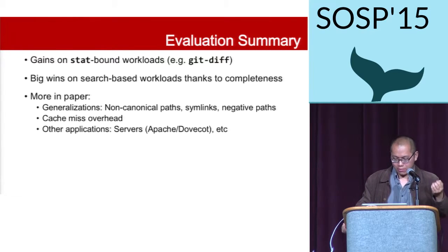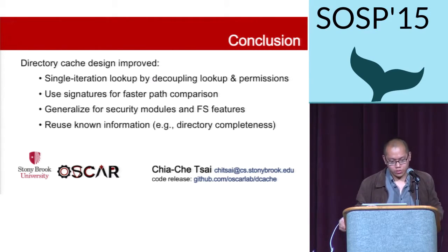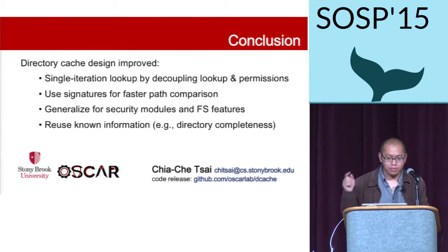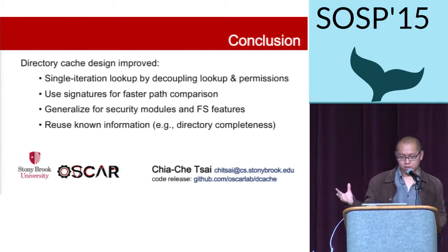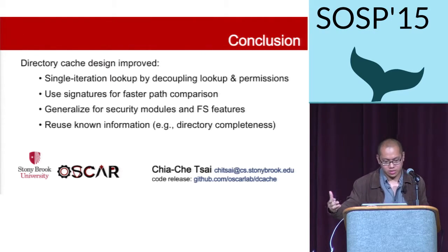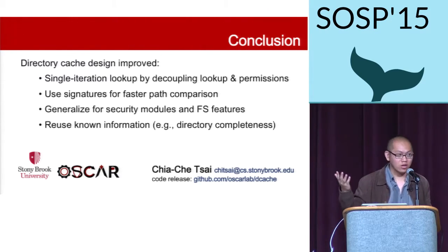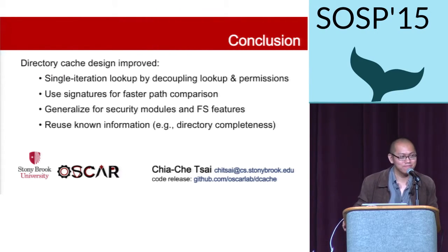In conclusion, we improved the design of directory cache. We improved the lookup algorithm from linear to single iteration by decoupling lookup from permission checking. We use signatures for faster path comparison, and we generalized this optimization for security modules and all file system features. There are other techniques like reusing known information — for example, directory completeness. The code is online; I encourage you to try it out. I'm happy to answer questions.